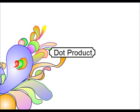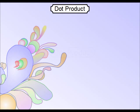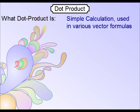Hi, this is Mr. Rees, and this video is going to focus on the dot product and its applications. Let's first start off with what the dot product is. The dot product is simply a calculation that we apply to vectors. This simple calculation is applied to various vector formulas, two of which we'll cover in this video.